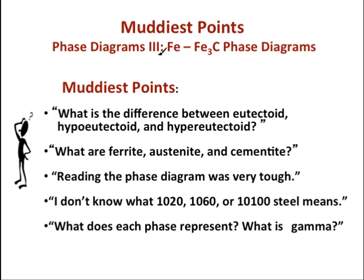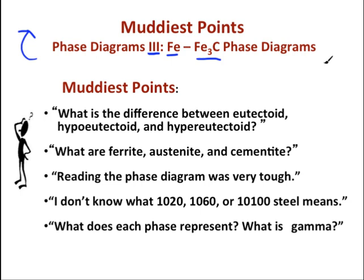Hello! Today's screencast is part 3 of the series about phase diagrams. This screencast will cover the iron-iron carbide phase diagram as an introduction. In Phase Diagrams 1, we talked about the eutectic reaction and using the Lever rule to do calculations. In Phase Diagrams 2, we talked about eutectic microstructures. Watching these videos will help you understand this one.